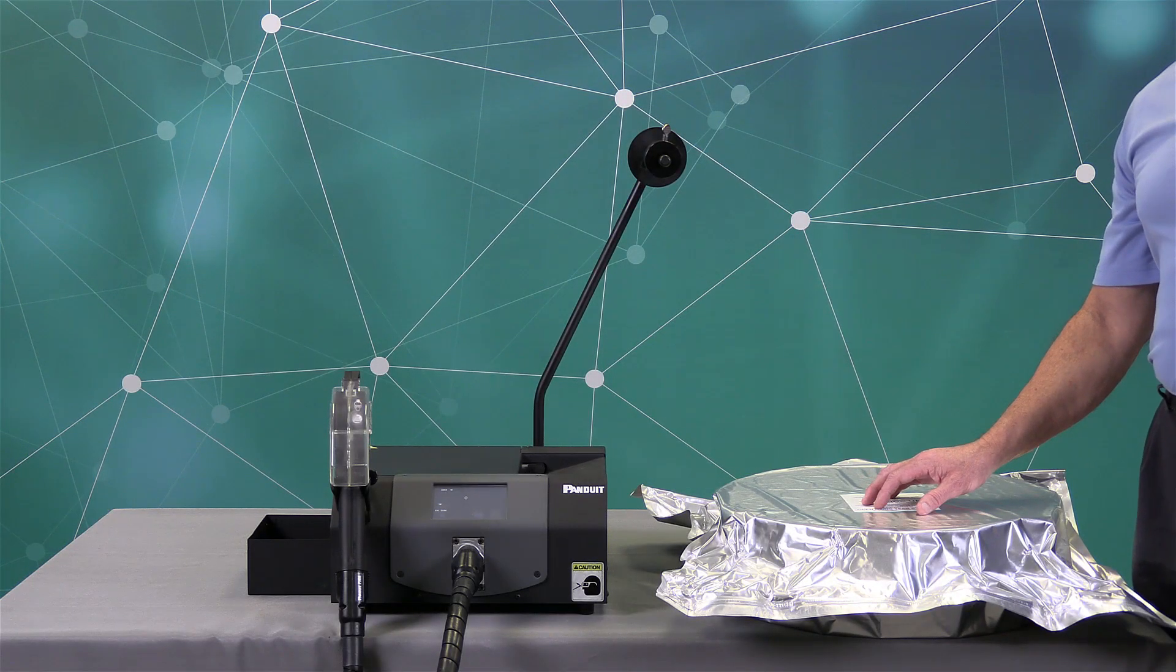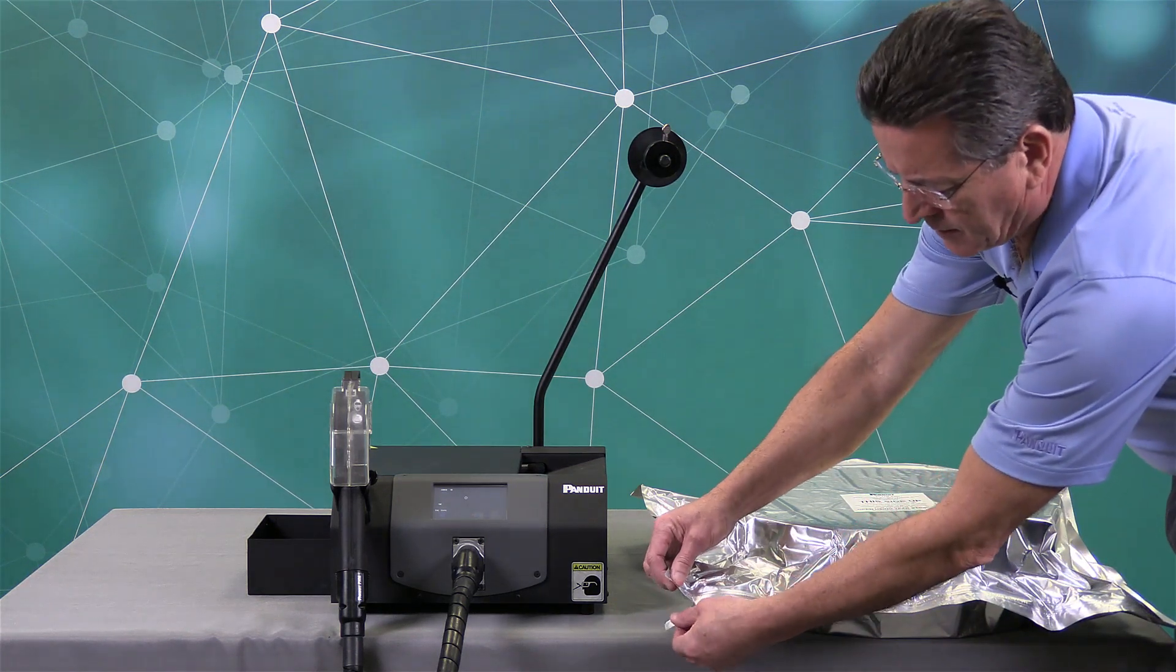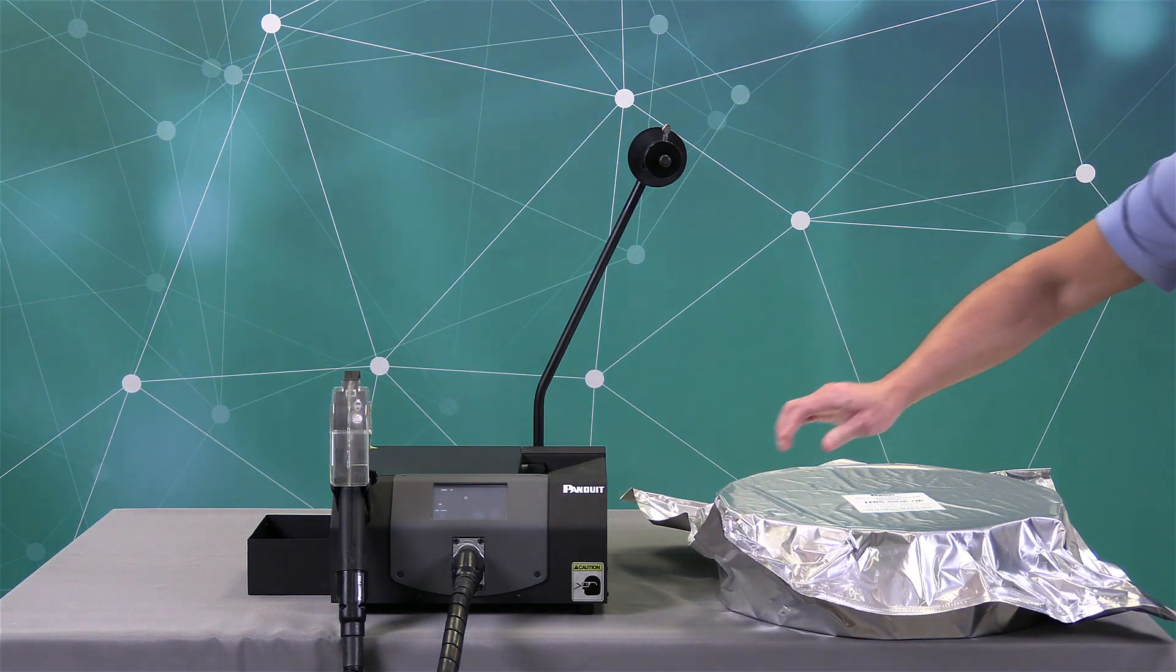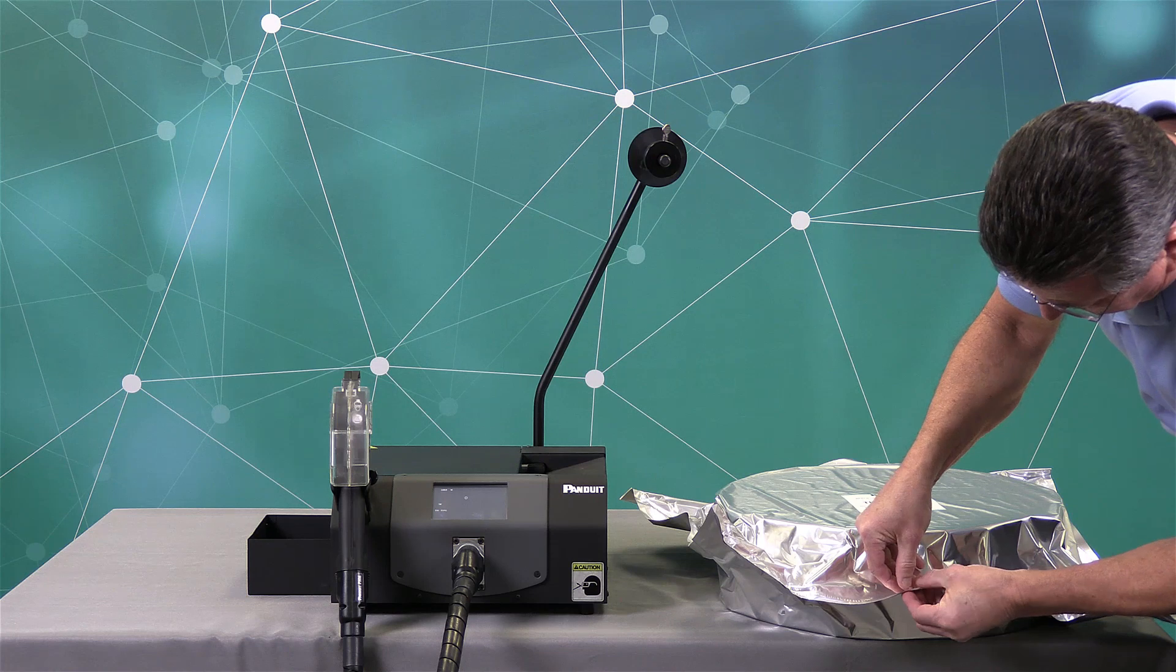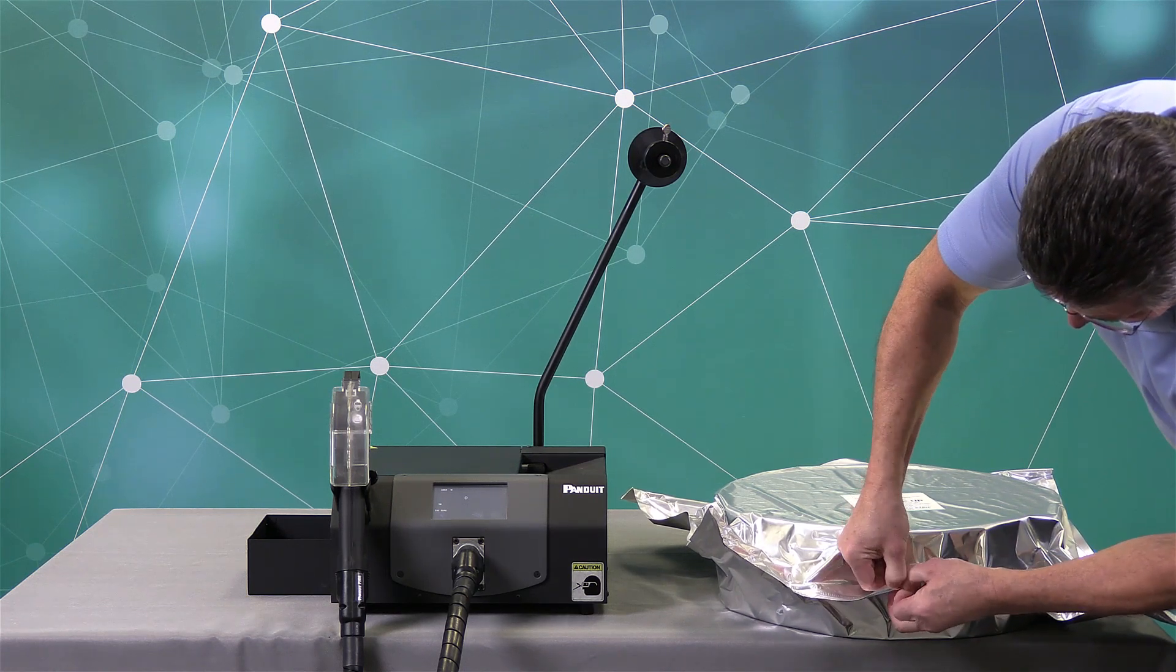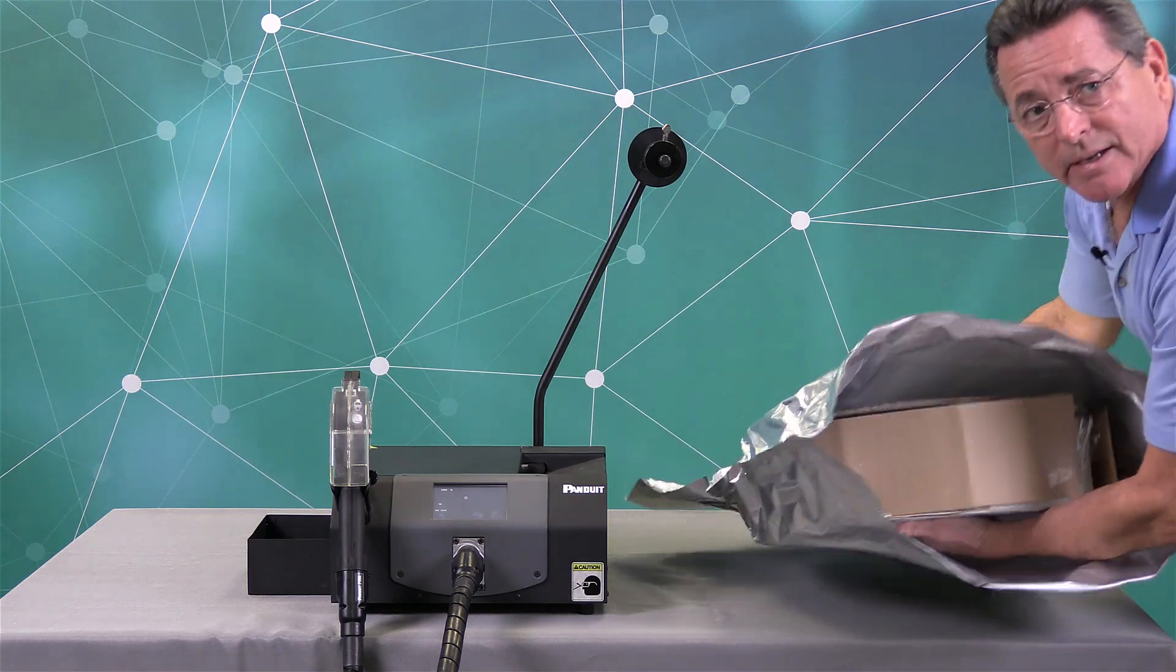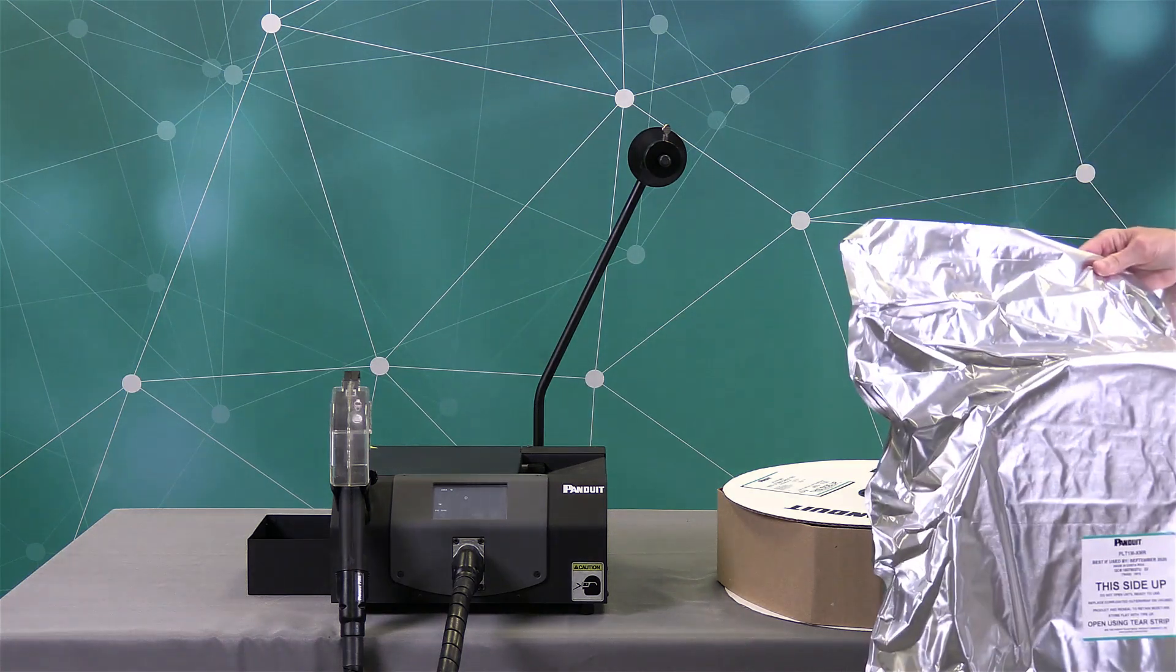When loading a reel of cable ties, it's important to open the bag properly by using the tear strip. So I'm just going to pull this open here. Okay, now I'm going to open the zip lock here. Then I'm going to remove the reel of cable ties from the bag. And we want to store this bag for future use.